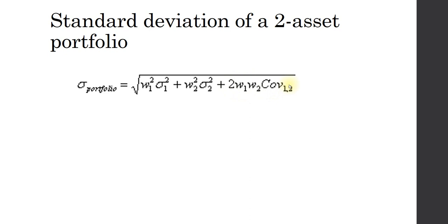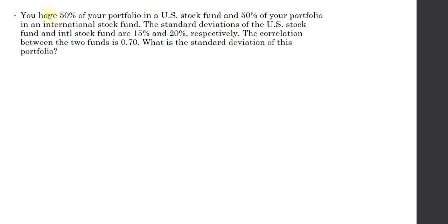The easiest way to understand this is to look at an example. Let's say you have a client that has 50% of the portfolio in U.S. stocks and 50% in international stocks. The standard deviations of the U.S. and international stocks are 15% and 20% respectively. The correlation coefficient between the two funds is 0.7. What is the standard deviation of this portfolio?